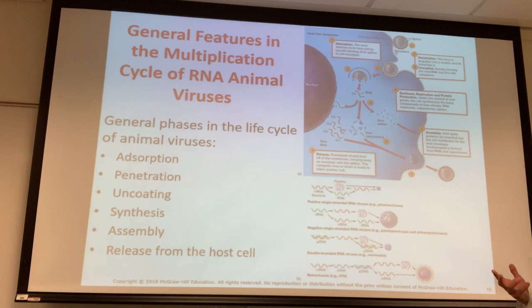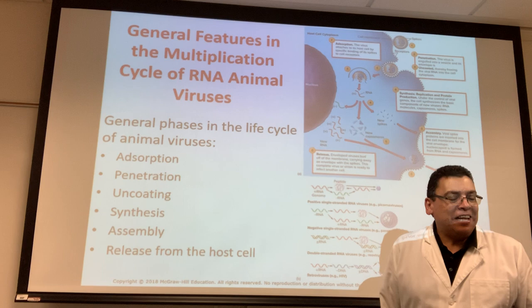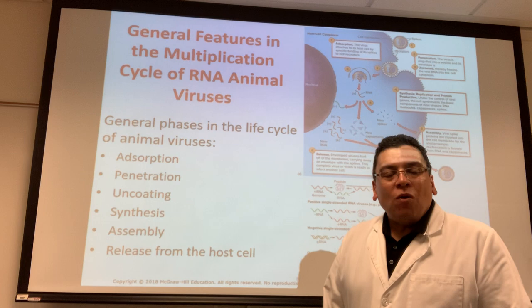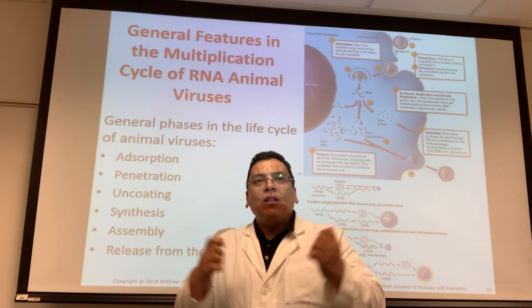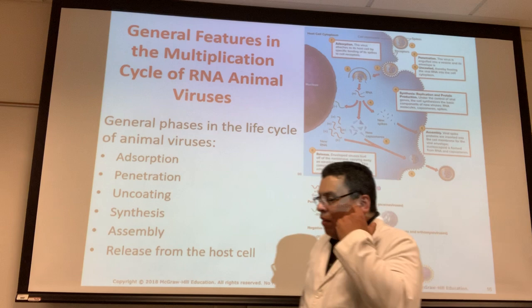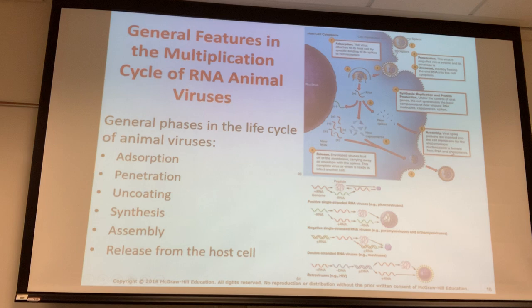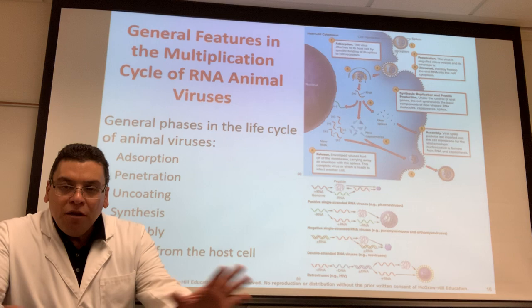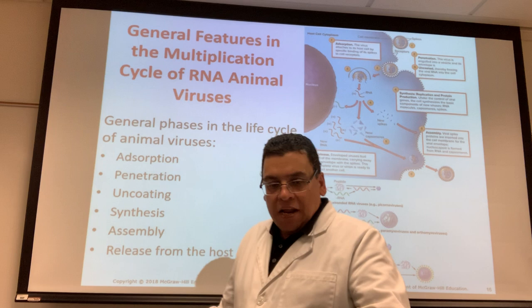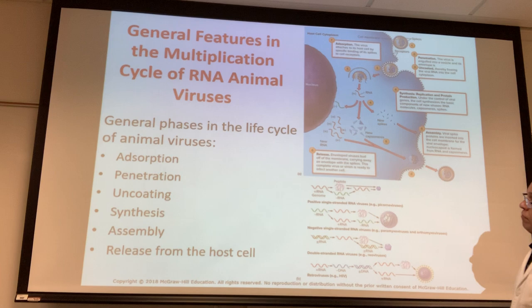Once the unwanted guest walks in and takes its coat(s) off, it uncoats in your cytoplasm. Now what you have is the genomic material — the nucleic acid, whether RNA or DNA — in your cytoplasm. It's like the unwanted guest coming in and throwing the jacket on the floor.